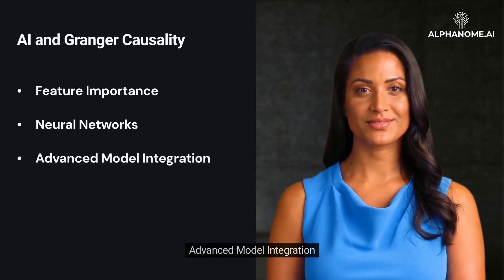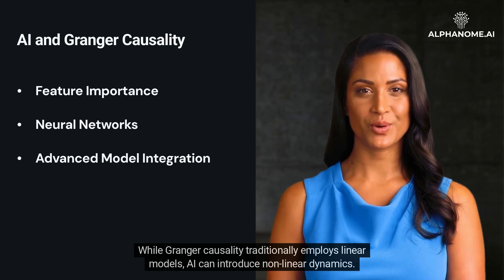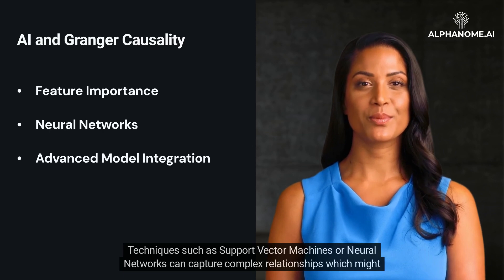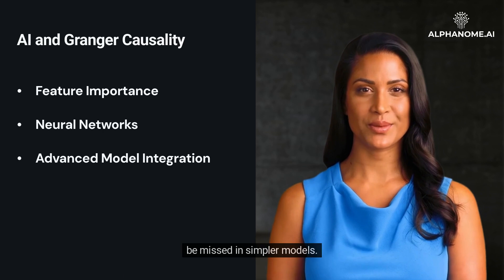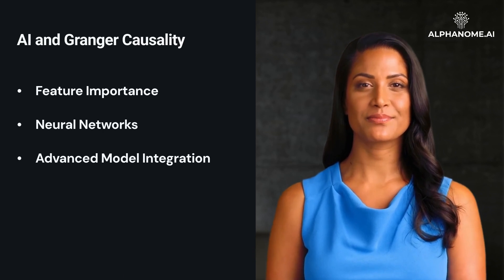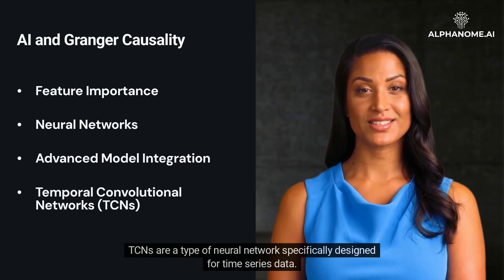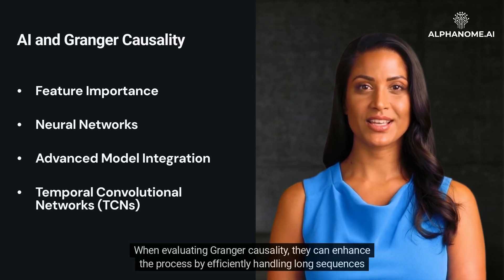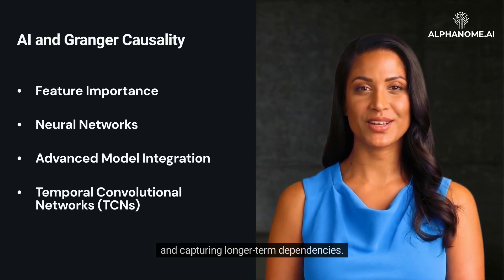Advanced Model Integration: While Granger Causality traditionally employs linear models, AI can introduce non-linear dynamics. Techniques such as support vector machines or neural networks can capture complex relationships which might be missed in simpler models. Temporal Convolutional Networks (TCNs) are a type of neural network specifically designed for time series data. When evaluating Granger Causality, they can enhance the process by efficiently handling long sequences and capturing longer-term dependencies.